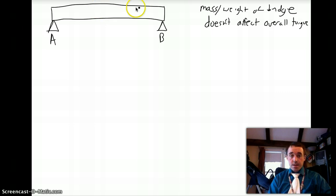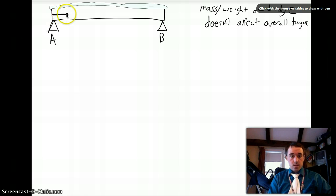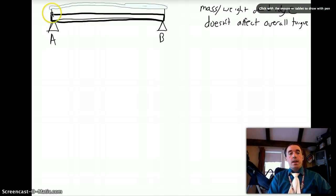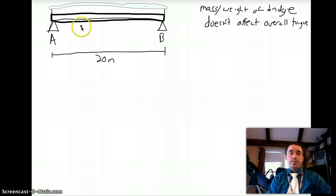Alright, let's say that there is a car on a 20 meter long bridge. And the car is located at about the 8 meter mark. And we want to find out all the torque so that ultimately we can find out the force that A has to push up with and the force that support B has to push up with.